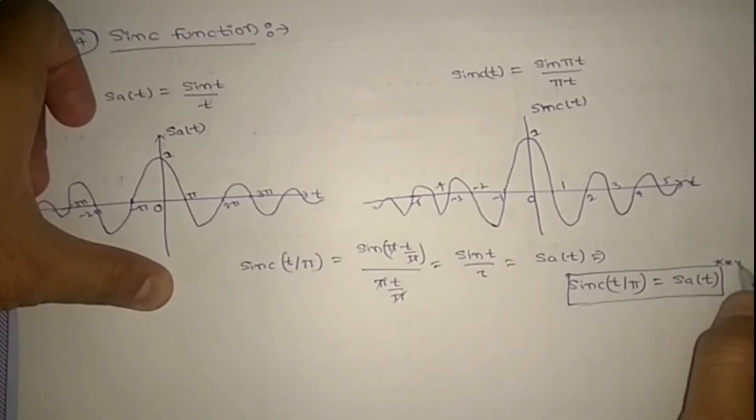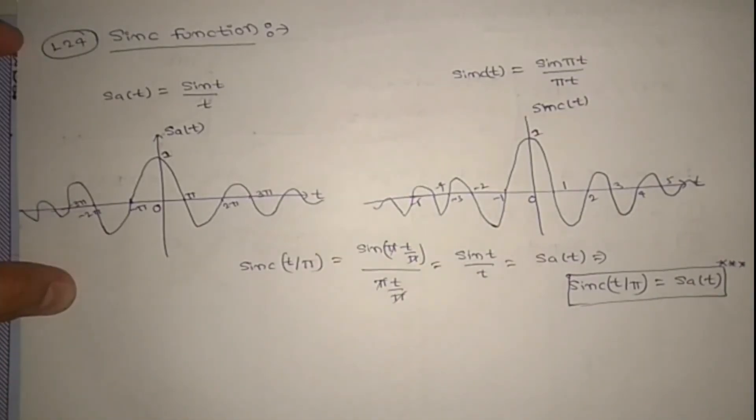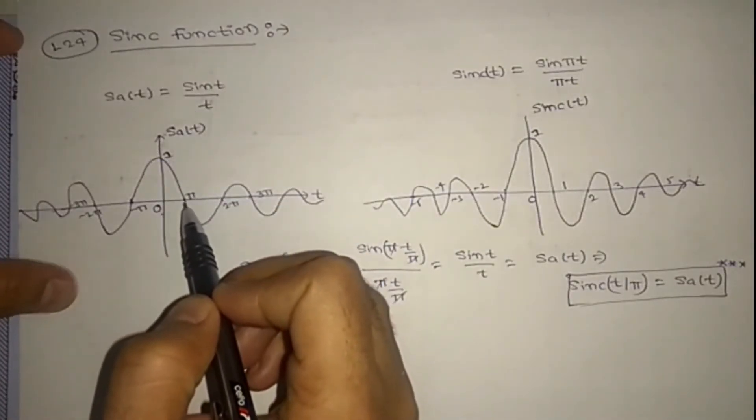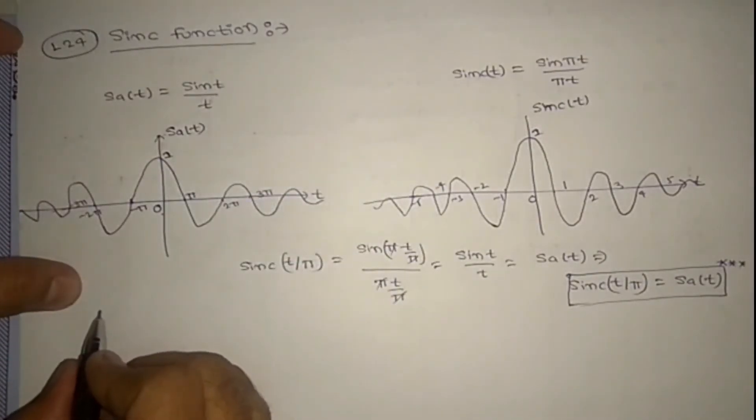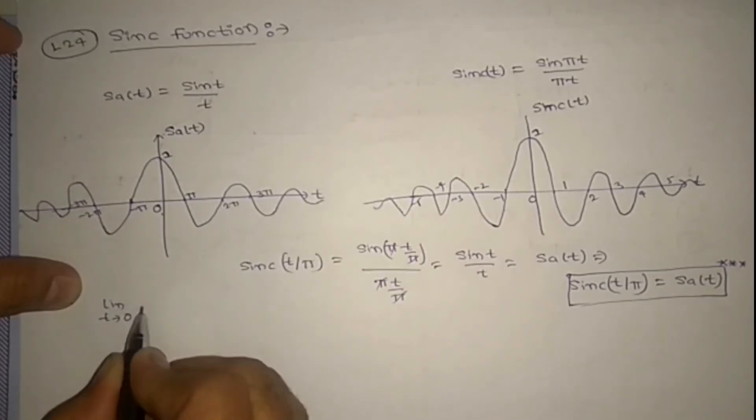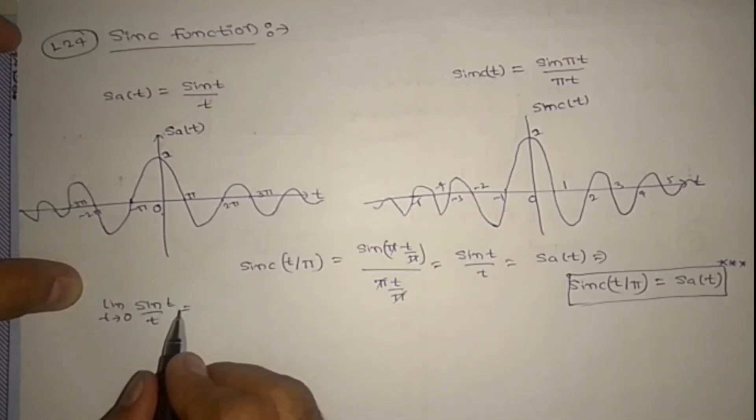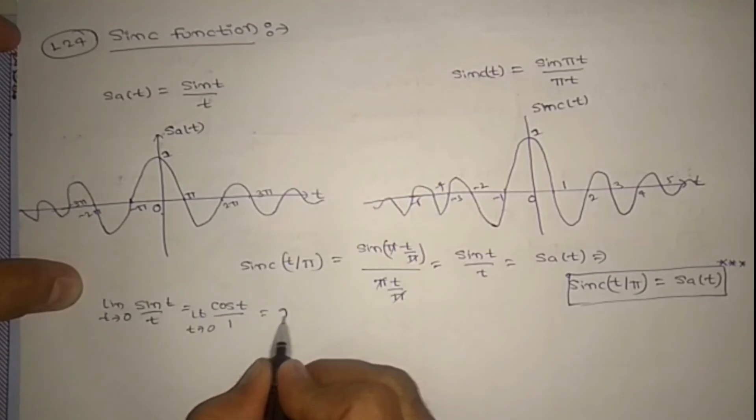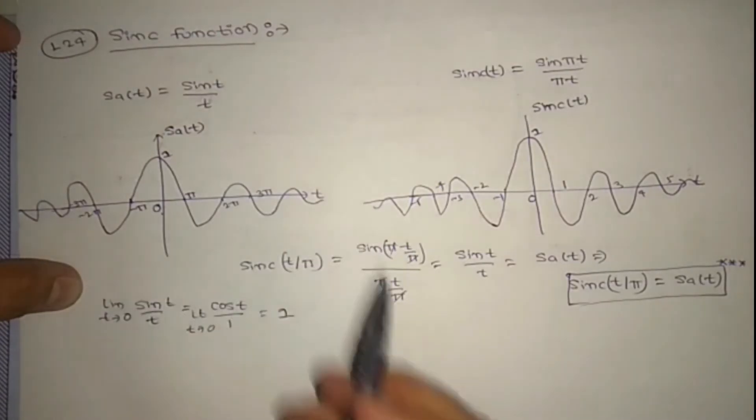Very, very important, this one. Asked in a gate exam also. You might have a doubt that at t equal to 0, how we got 1? So you need to apply limits. Limit t tends to 0, sinc t by t. So it is 0 by 0 format. You can go for L'Hôpital rule. So this is cos t, this is 1. Limit t tends to 0, cos 0 is 1. Got it? At t equal to 0, it is 1.